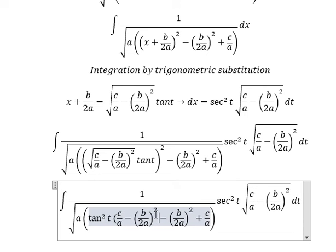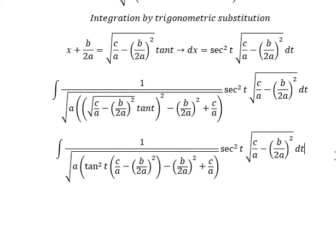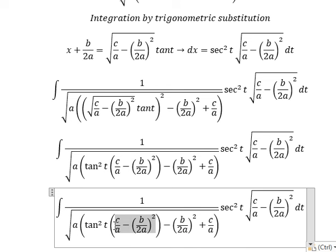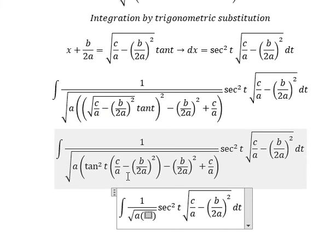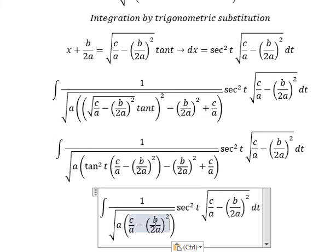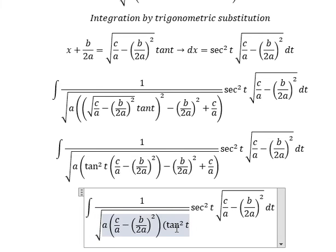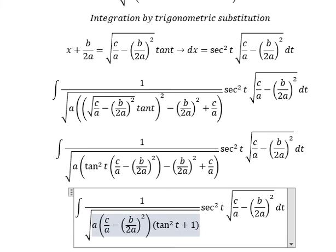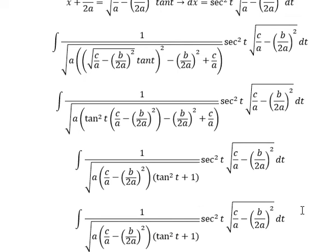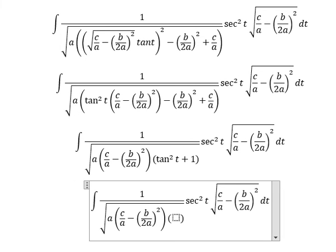a squared, everything. And now we can do factorization of this one. So we will have tan squared t, then tan squared t plus 1. Next, this one we change for secant squared of t.